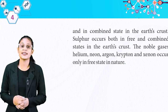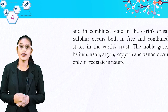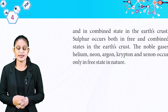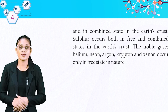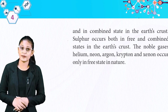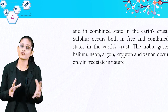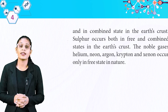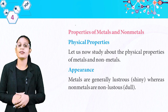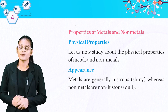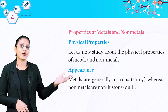The noble gases — helium, neon, argon, krypton, xenon — occur only in free state in nature. Some non-metals occur in free state, and some occur in both free and combined states. Now we have the properties of metals and non-metals. First, we are going to discuss physical properties.